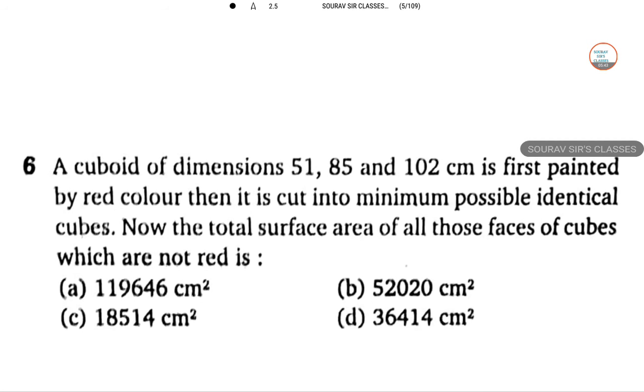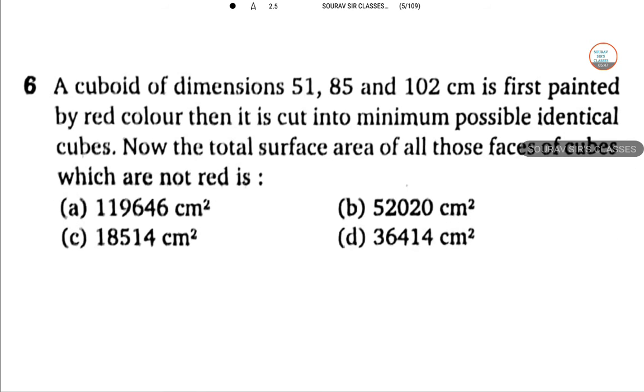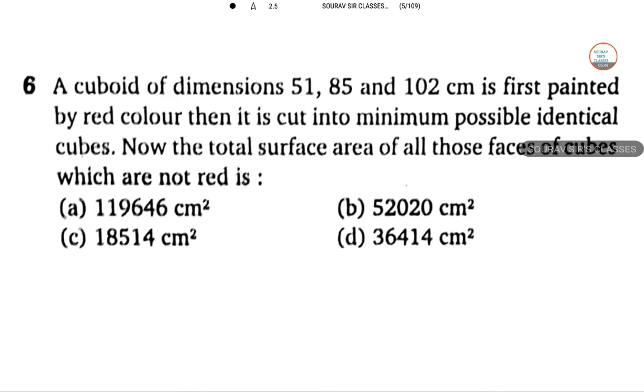Next is question number 6. It's about a cuboid of dimensions 51, 85 and 102. Cube means all sides same, cuboid means this type of structure. It's first painted by red color, then it is cut into minimum possible identical cubes.